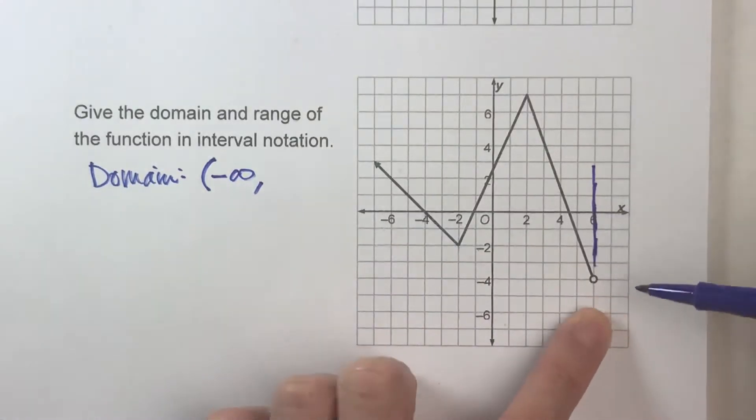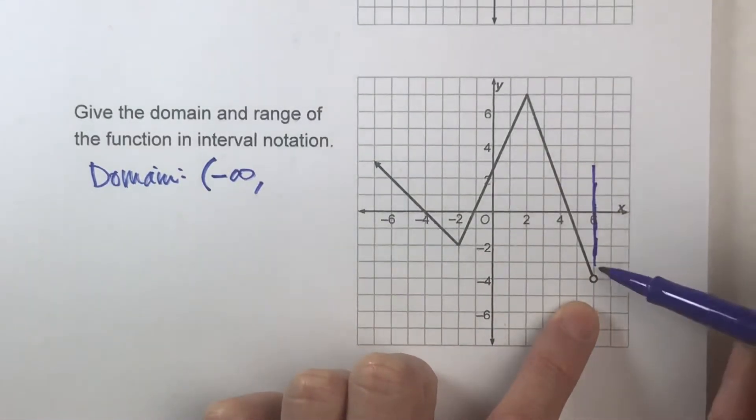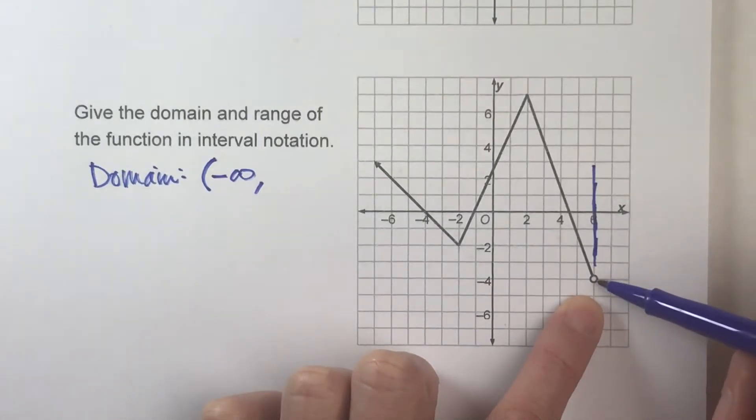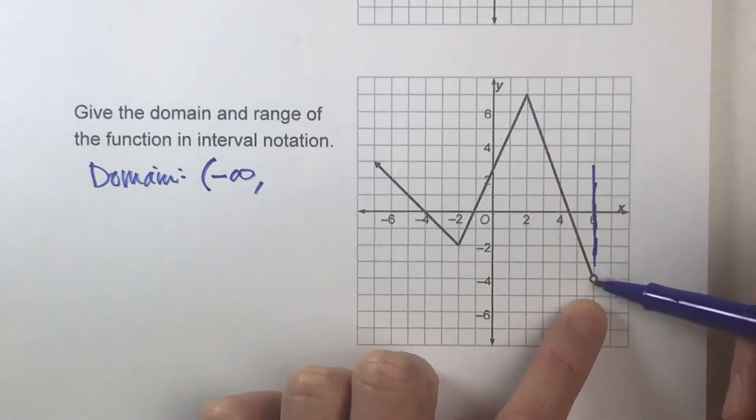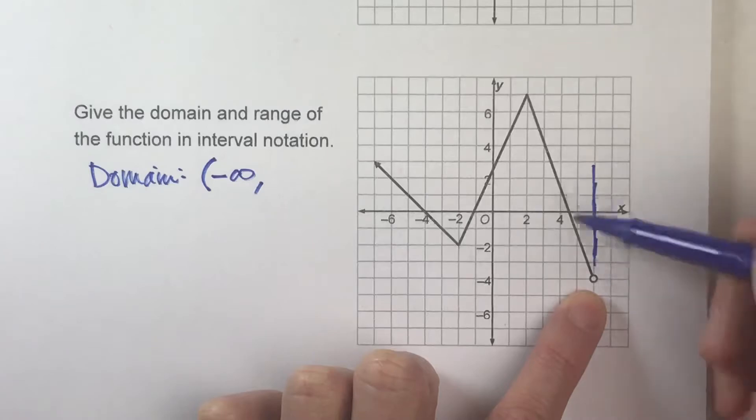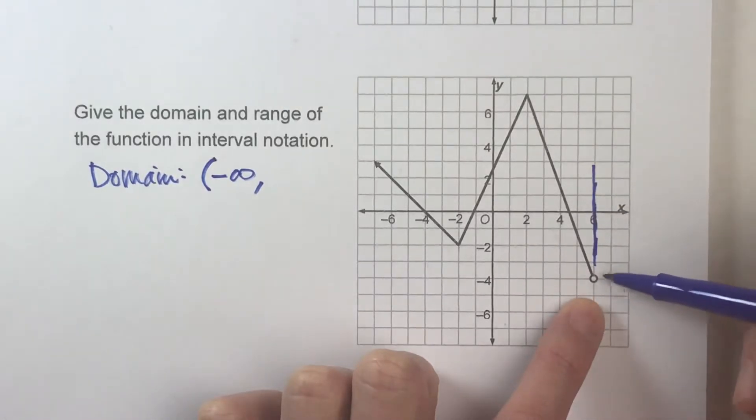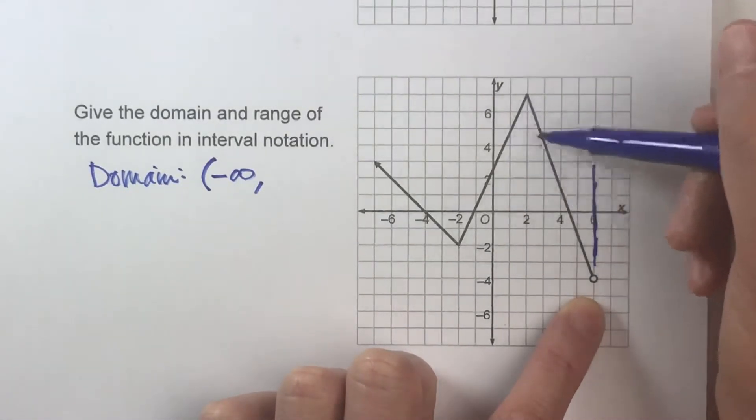But look here. We've got an open circle on that end. What that tells me is x does not include that value as part of our function. It goes up to, but does not include it. Before, we had a filled-in circle. That means it actually can be it. But when it's open, that means it can't. So that means x goes up to 6, but does not actually include 6.